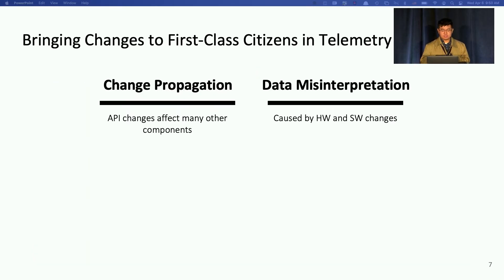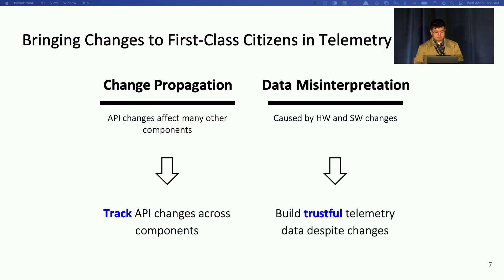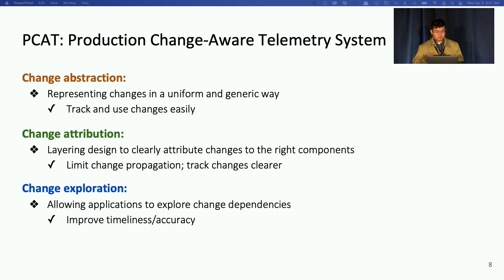So to fundamentally address these two challenges to draw from the incidents, aka change propagation and data misinterpretation, we hope to bring changes to a first-class citizen in the telemetry. Specifically, can we explicitly track API changes cross-components? Can we build trust for telemetry data despite these changes? So that's a system we are presenting here, PCAT, the Production Change Aware Telemetry System at Meta.